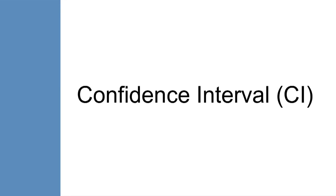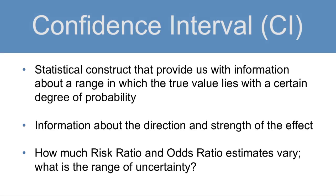Sometimes you might see a measure of disease occurrence or a measure of association accompanied by a confidence interval. What is a confidence interval? Confidence intervals are a statistical construct that provide us with information about a range in which the true value lies with a certain degree of probability, as well as information about the direction and strength of the effect. Since we don't know the true value of, say, a risk ratio or an odds ratio, we calculate their estimates. Confidence intervals let us know how much our estimates of these measures of association might vary.